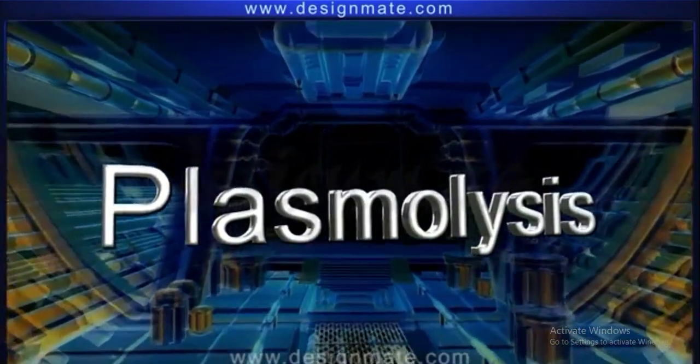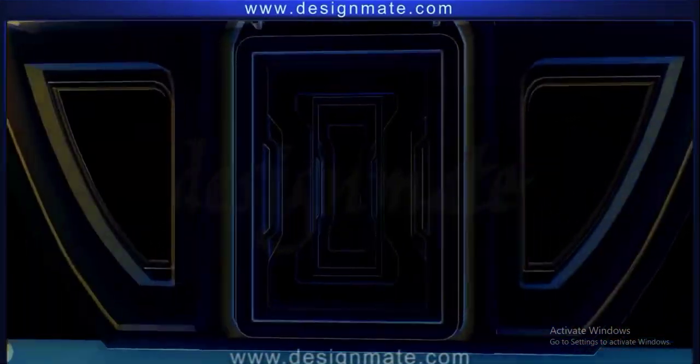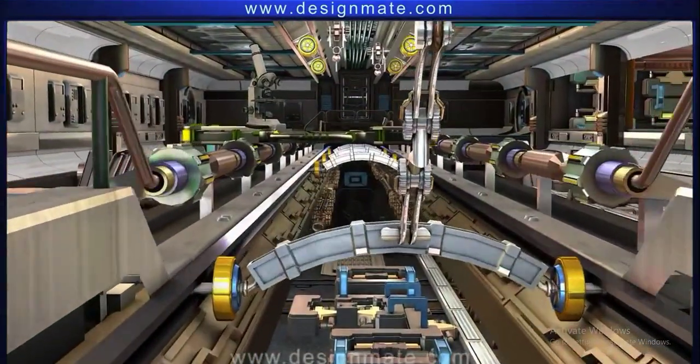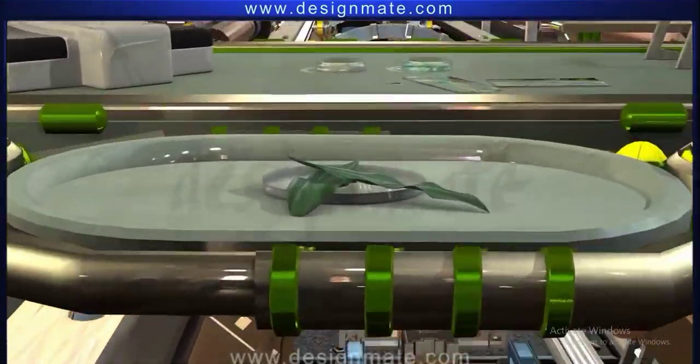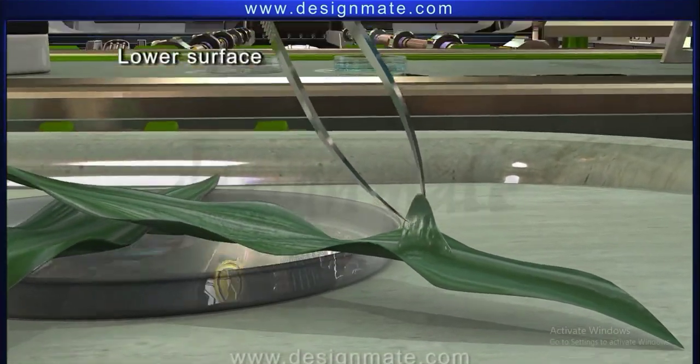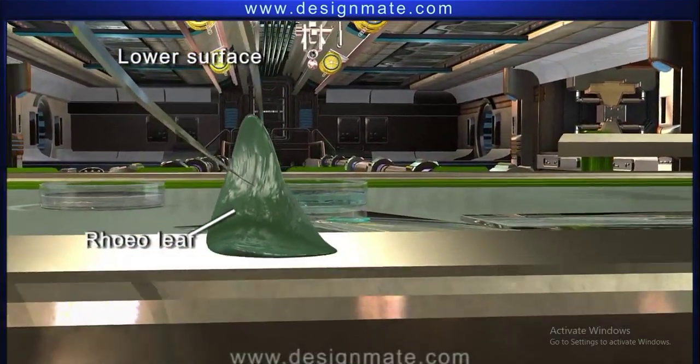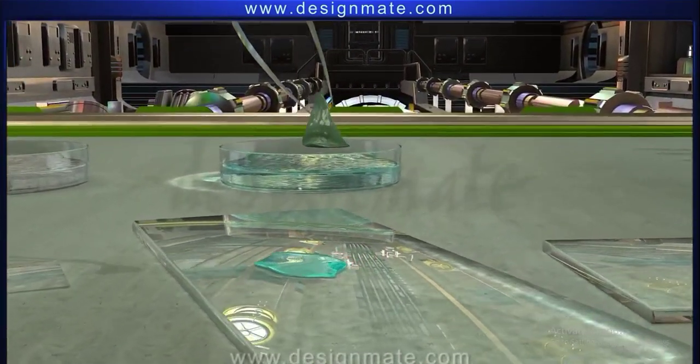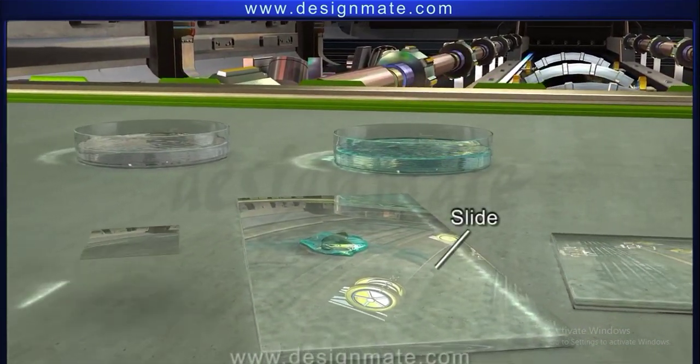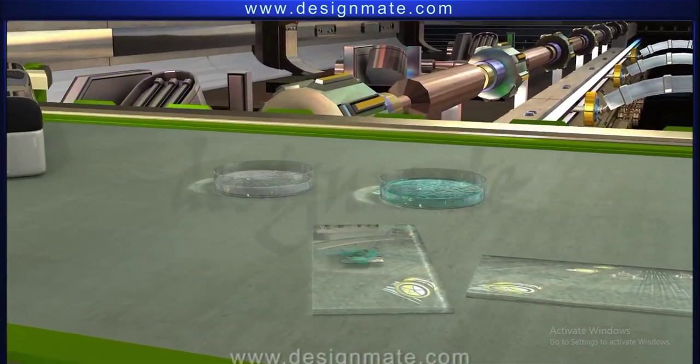Plasmolysis. To understand the phenomenon of plasmolysis occurring in plants, take a peel from the lower surface of a rhoeo leaf. Place the peel on a drop of water on a slide and cover it with a cover slip.